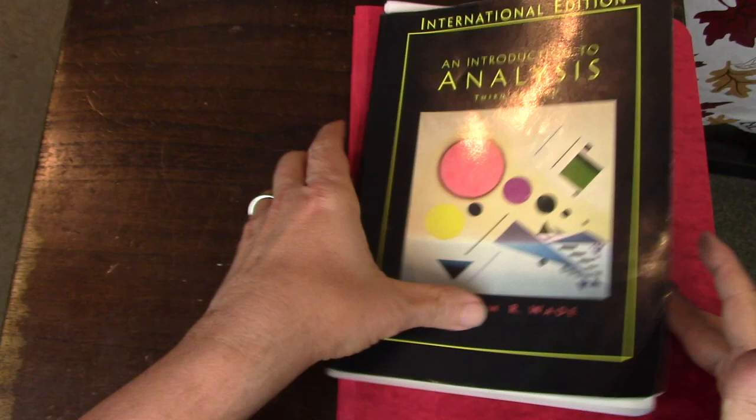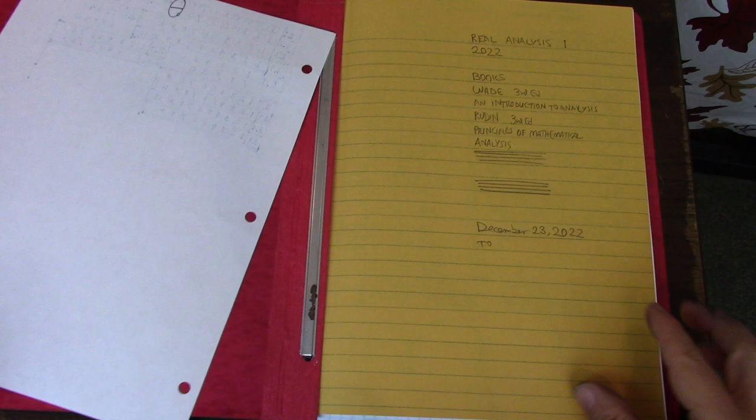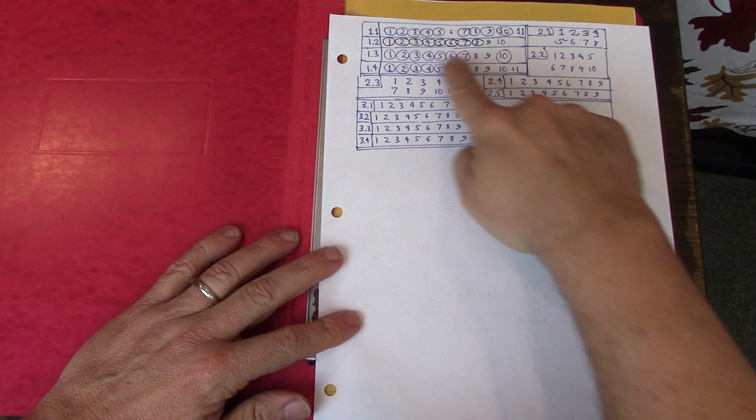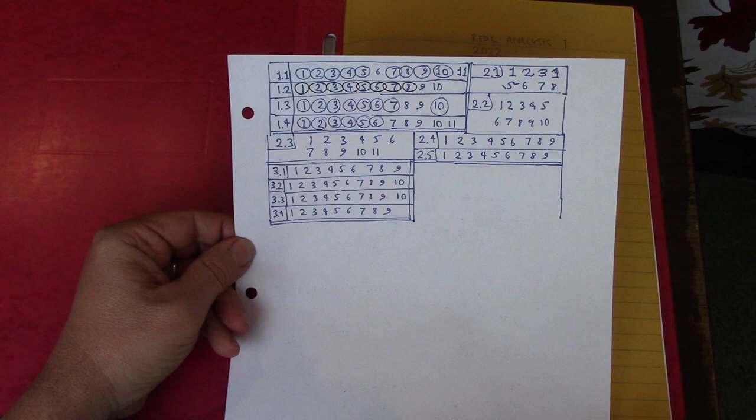I'm logging here all the problems by chapter and section - which ones I've done. This is something I could have used when I read Rosen, because a lot of times I would wonder which problems I'd done.